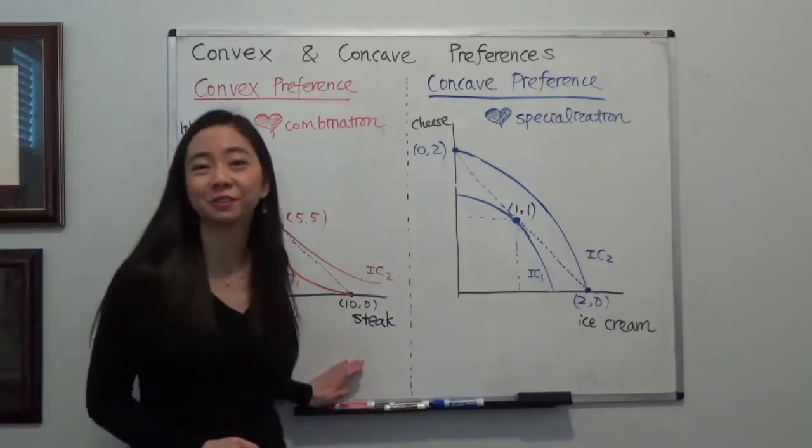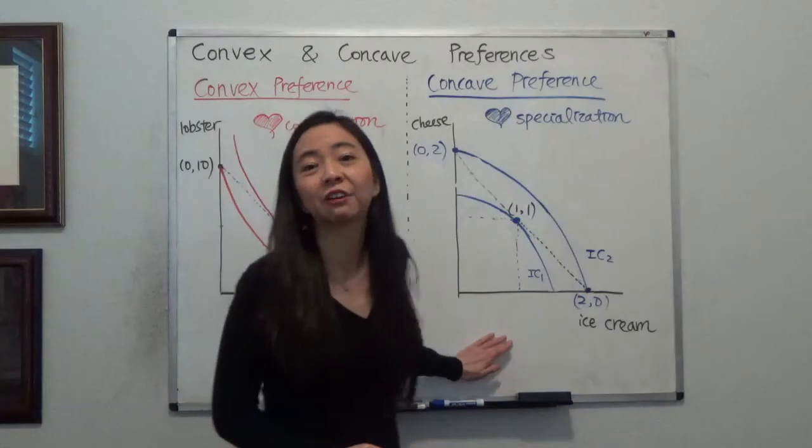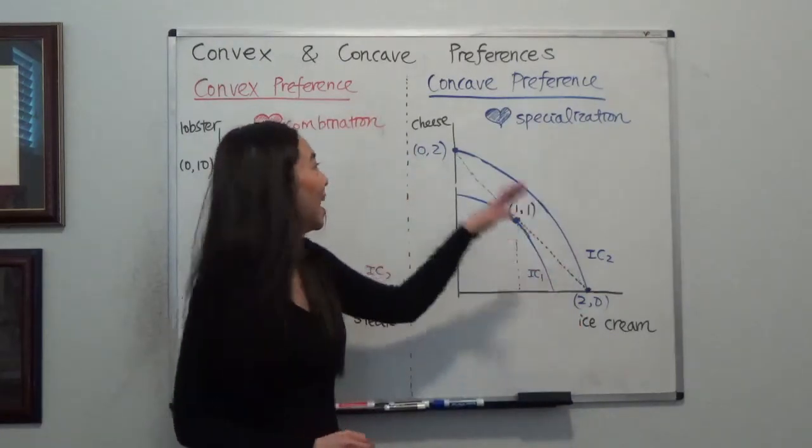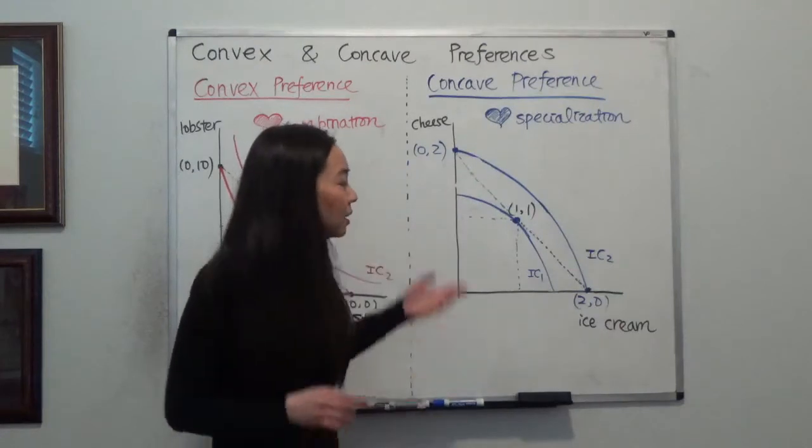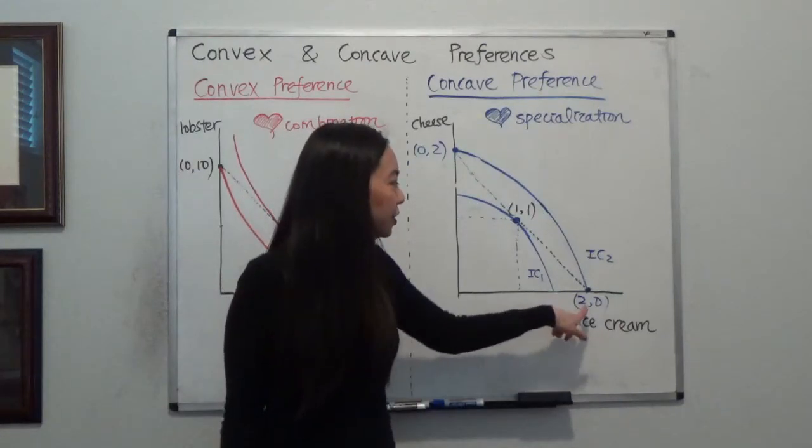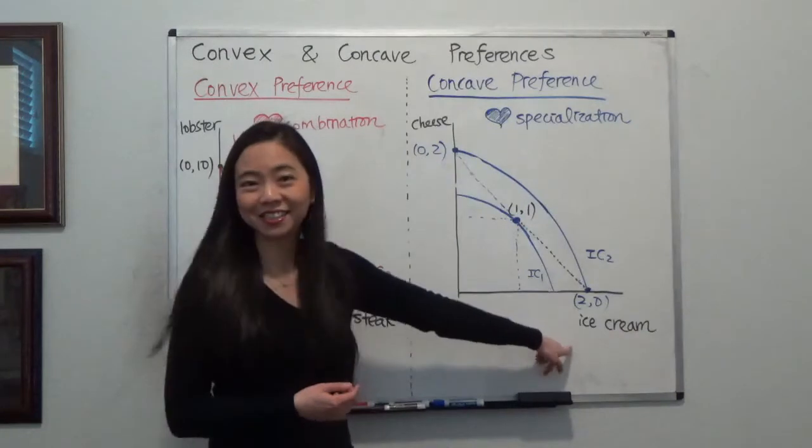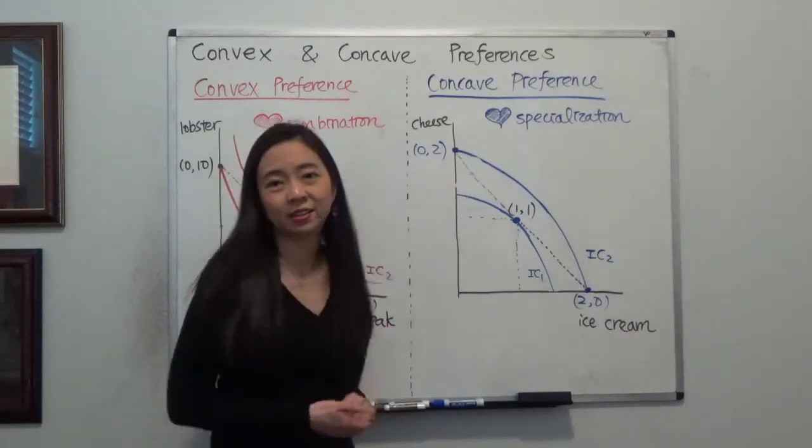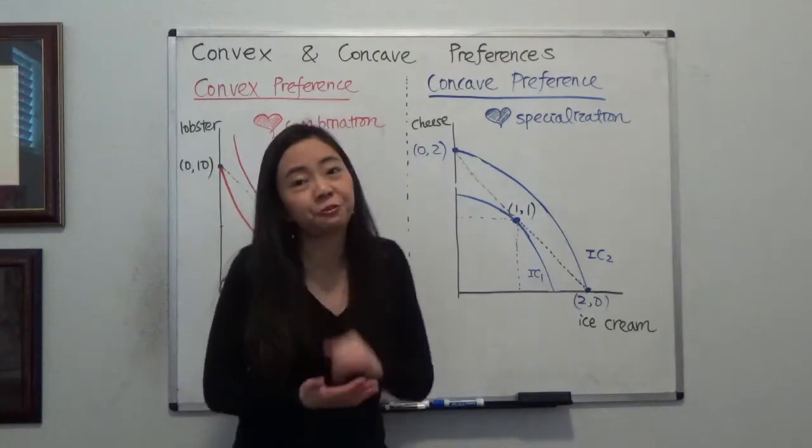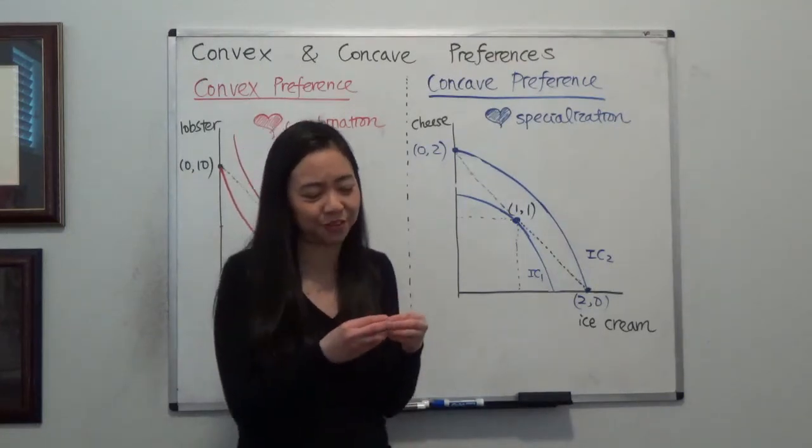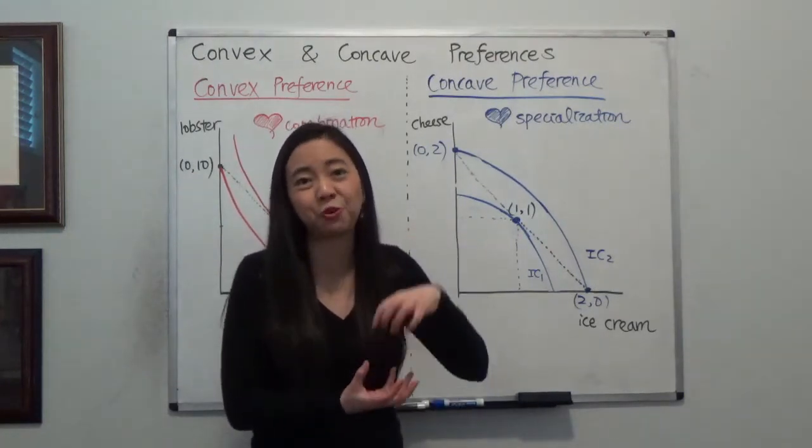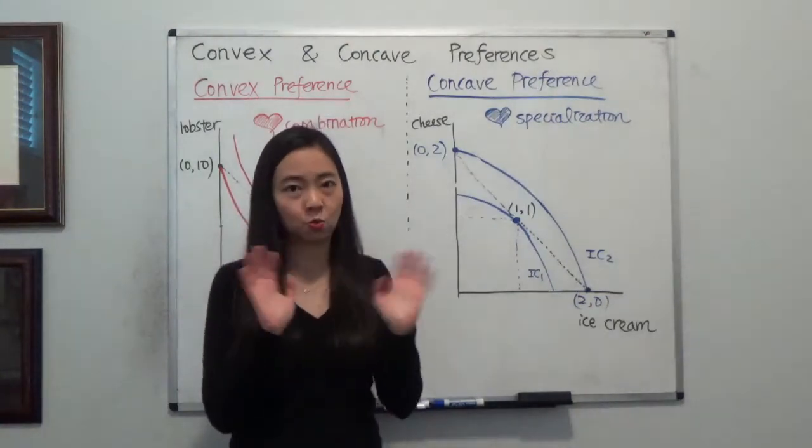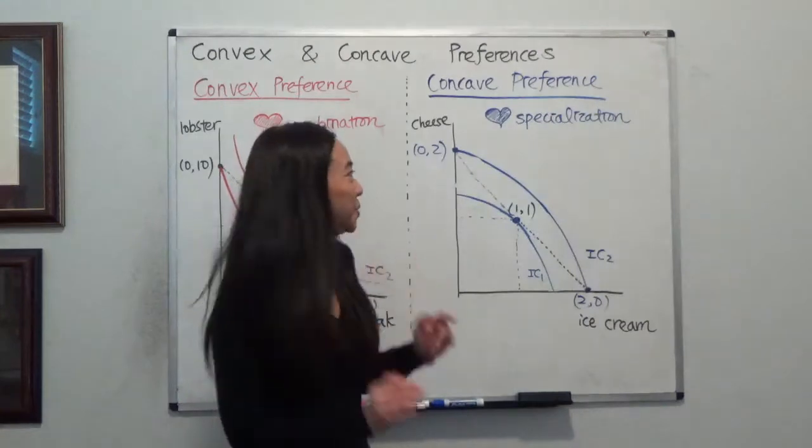Now, suppose the main course is over, and you're going to have dessert. For dessert menu, you have ice cream and you have cheese. So you can choose to either have two scoops of ice cream and no cheese, or two slices of cheese and no ice cream. But I think very few of you would choose to have a slice of cheese on top of one scoop of ice cream. Just the thought of it makes you feel, no, I don't want the combination of them. So in that case, you have a concave preference.